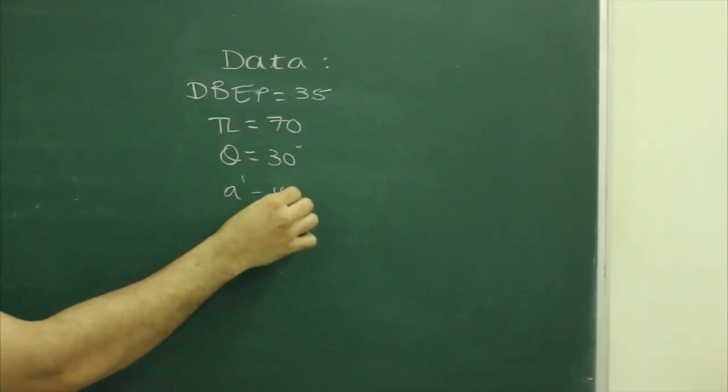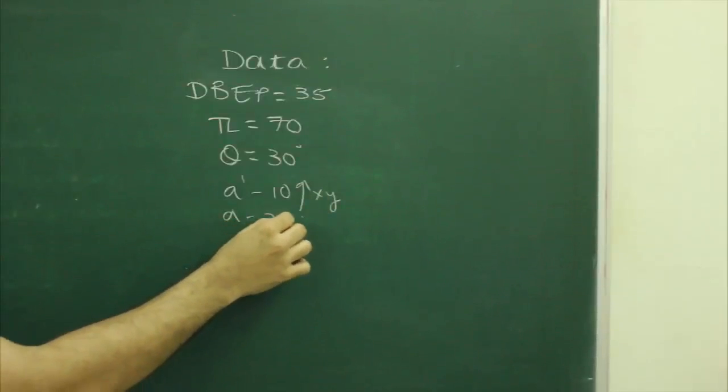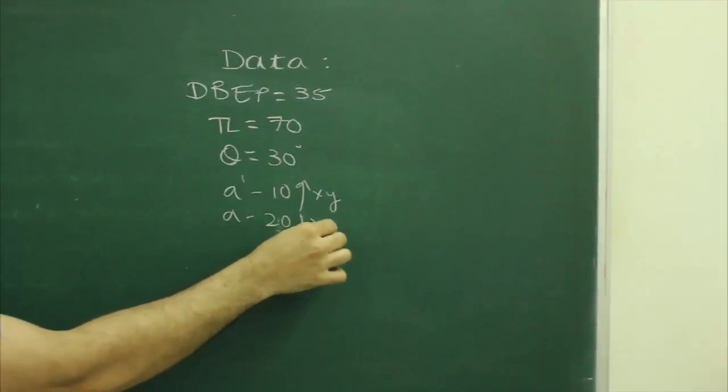A dash, 10mm above xy. A, 20mm below xy.